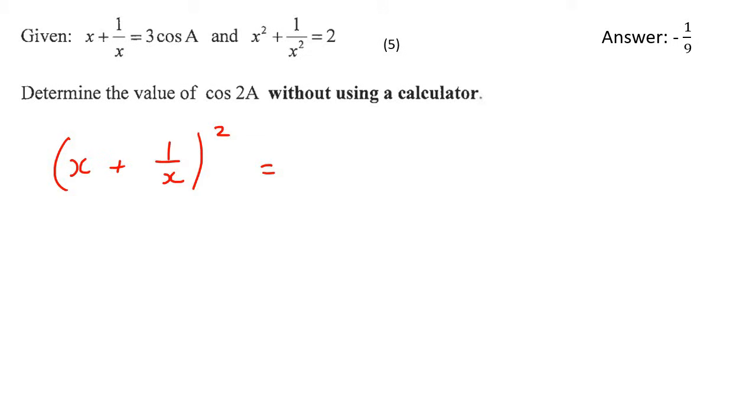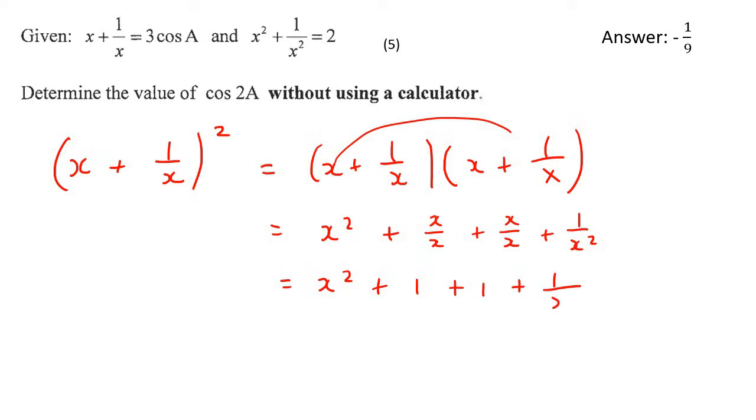So that will become, you can put the two brackets like that, and that's going to become x squared plus, now you're going to multiply these together, which is x over x plus x over x plus 1 over x squared. And so that's going to give us x squared plus 1 plus 1 plus 1 over x squared. And so that's going to give us x squared plus 1 over x squared plus 2.